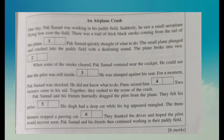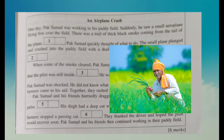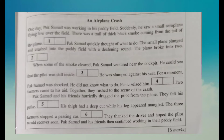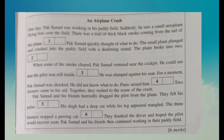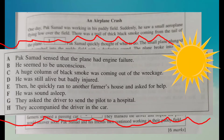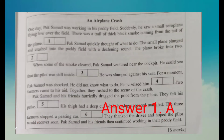Now let's look at the given passage — an airplane crash. One day, Pak Saman was walking in his paddy field. Imagine in your head what is happening. Suddenly, he saw a small aeroplane flying low over the field — so there was probably only one pilot in the plane. There was a trail of thick black smoke coming from the tail of the plane. So you can imagine Pak Saman was walking in the field and there was an aeroplane flying above his head with smoke coming out from the plane. So what is the answer for number one? The closest answer — yes, bingo — Pak Saman sensed that the plane had engine failure. The answer is A.